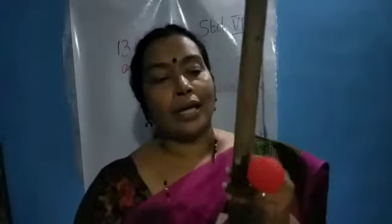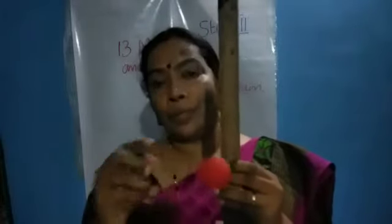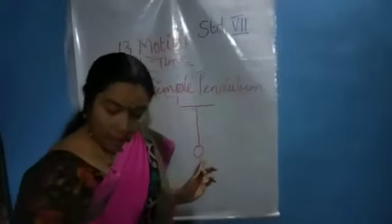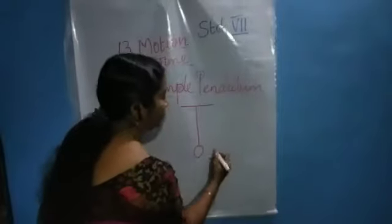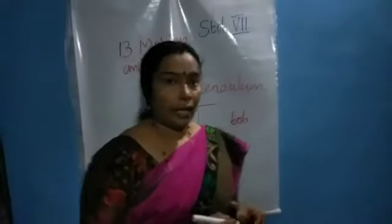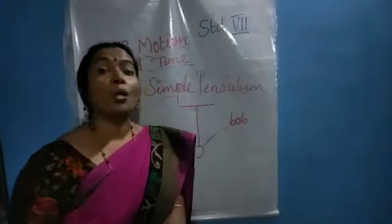Here, as an improvised device, I made a simple pendulum. I used a rubber ball instead of a metal ball and connected the rubber ball with a thread and fixed it to a rigid stand. So this motion is just like the simple pendulum. The metal ball in the simple pendulum is called a bob.